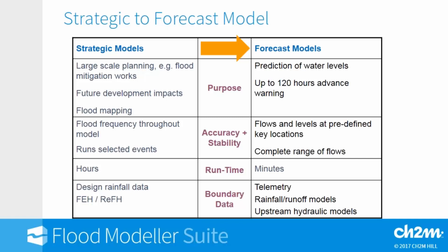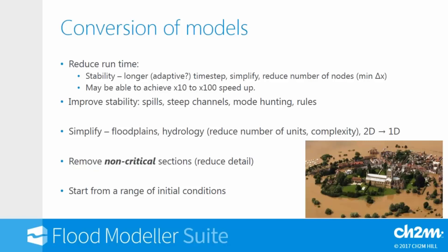Rather than just a design event or calibration event, forecast models need to run 24/7 - all the time, for low flows and high flows. For a strategic model we don't particularly care if it runs in hours or days, but a forecast model needs to run in minutes, maybe even seconds. There's also a difference in boundary data: we get real-time data into our forecast models, not design data - whether that's real-time observed telemetry data or forecast flows from an upstream hydraulic or rainfall runoff model. A flood mapping model usually contains a 2D component, whereas forecasting models need to run very quickly and typically will not contain a 2D element.